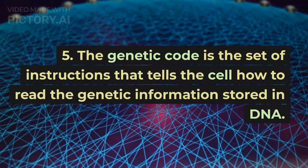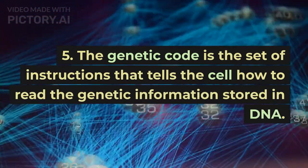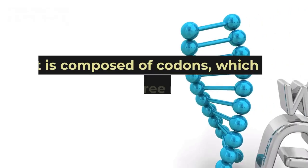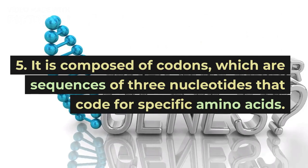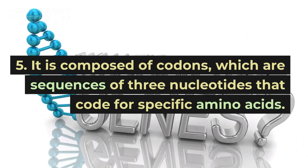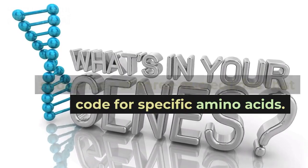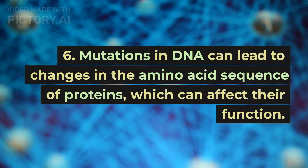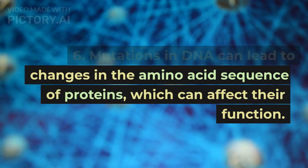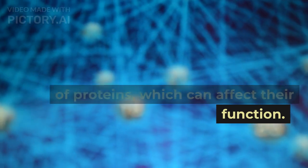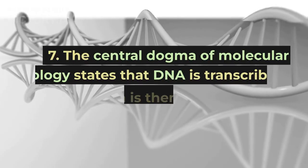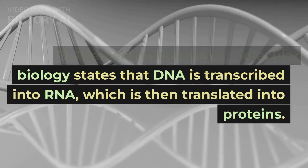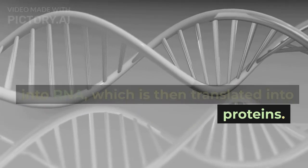The genetic code is the set of instructions that tells the cell how to read the genetic information stored in DNA. It is composed of codons, which are sequences of three nucleotides that code for specific amino acids. Mutations in DNA can lead to changes in the amino acid sequence of proteins, which can affect their function. The central dogma of molecular biology states that DNA is transcribed into RNA, which is then translated into proteins.